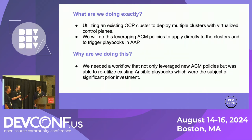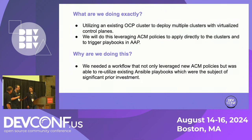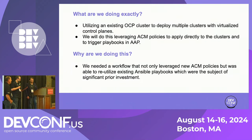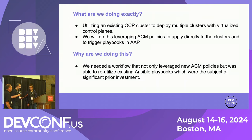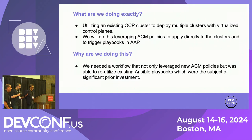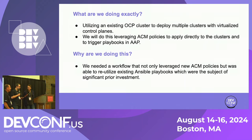Why would we want to do such a thing? There are several reasons. The main ones are cost savings, time savings, and versatility. In situations where we do deployments like this on a large scale, there's already been significant investment in time, money, and effort in legacy code. Utilizing ACM policies to trigger AAP playbooks allows us to reuse this code without the need for substantial retooling, bringing significant savings in both time and money. It also allows us to leverage new concepts in ACM without reworking or discarding the legacy code.